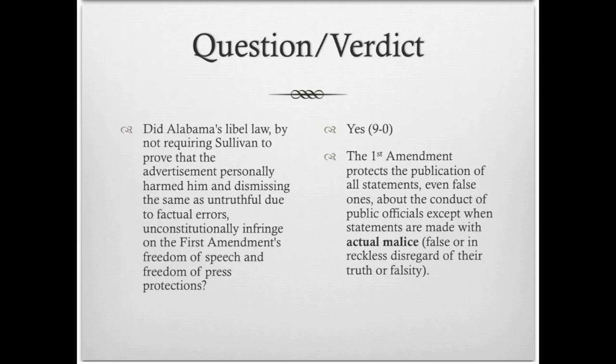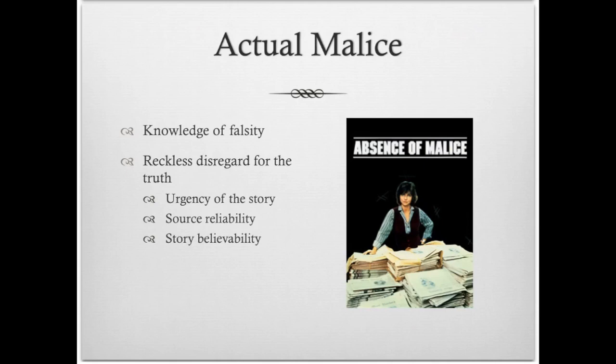What this criteria involves is the knowledge of falsity and this reckless disregard for the truth. What that means is that you know the story is false, you publish it anyway, and you know that there's going to be harm. This can be mitigated, according to the court, by three specific areas.